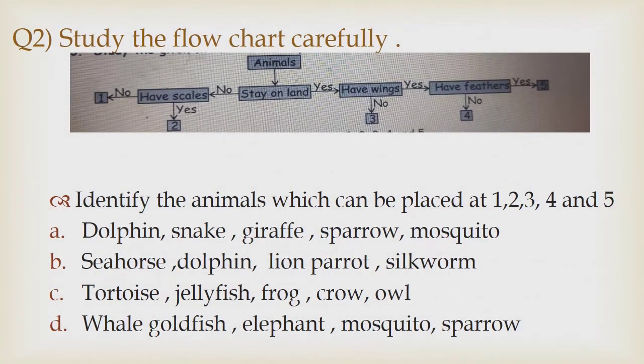Question 2. Study the following flowchart carefully. Identify the animals which can be placed at 1, 2, 3, 4 and 5.